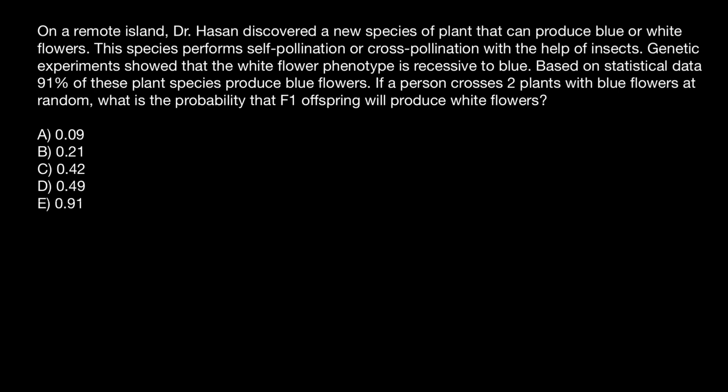In order to solve this problem, all you need to know is the Hardy-Weinberg formula. We learned it at the very beginning when we started population genetics. Here's the formula: F stands for the frequency of the three genotypes which we can get when we have one locus with two alleles. Frequency equals p squared plus 2pq plus q squared, and all this equals one.